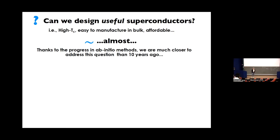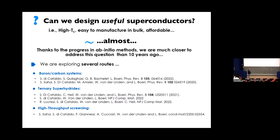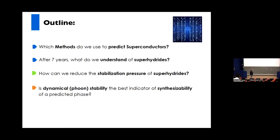The reason the answer is 'almost' is that in the last 10 to 15 years there has been very large progress in ab initio methods — specifically DFT-based methods — to deal with superconductors. We are currently addressing several routes: looking at boron-carbon systems, looking at so-called superhydrides which form under pressure, and using high-throughput screening with more intelligent methods to screen materials. What I'd like to focus on today is our recent work on ternary superhydrides.